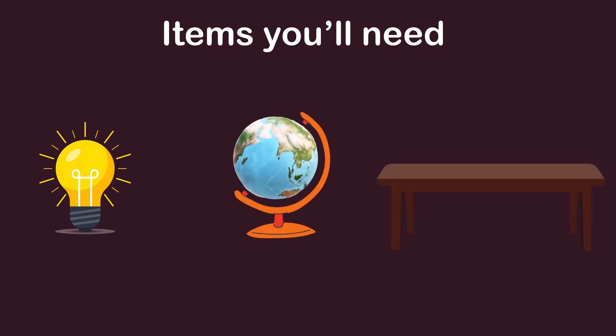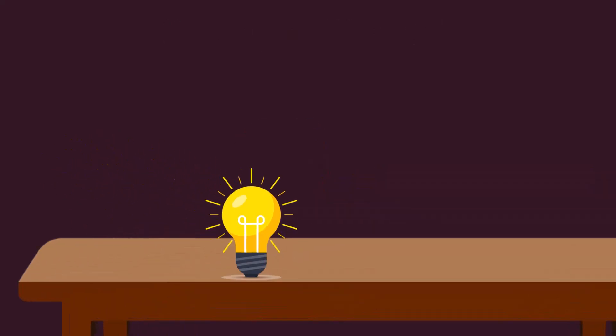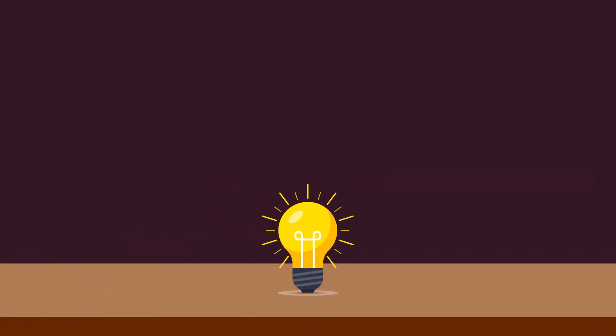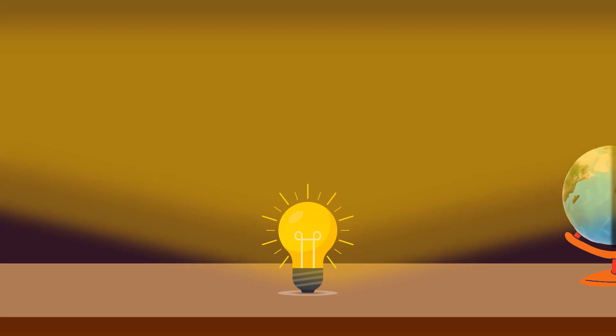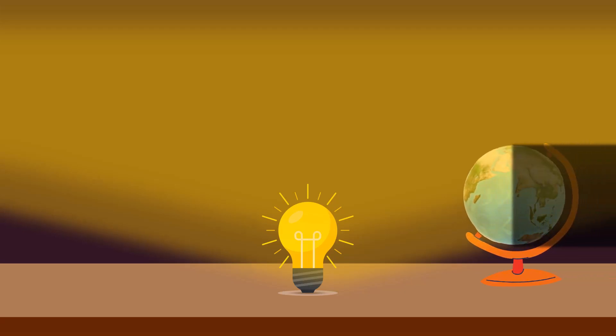You'll need a bulb or lamp for the sun, a globe for the earth, and a table. First, put your bulb in the middle of the table and turn it on. And place your globe near the edge.